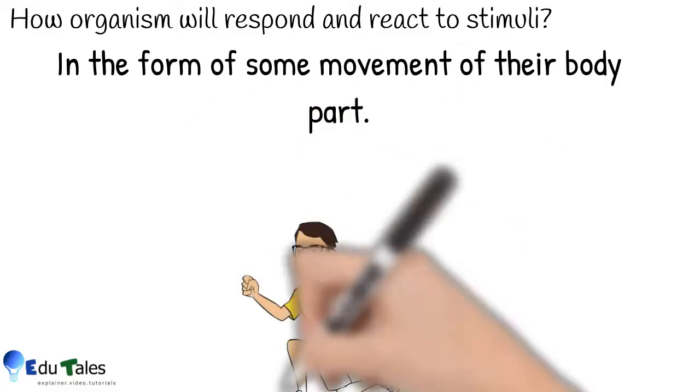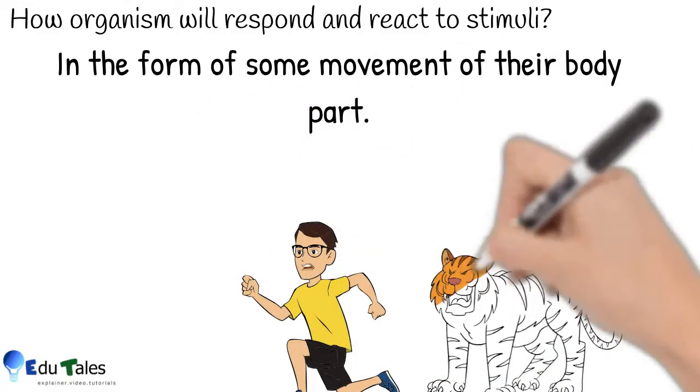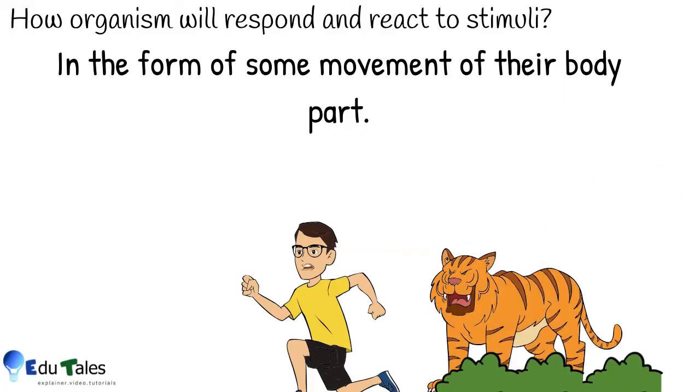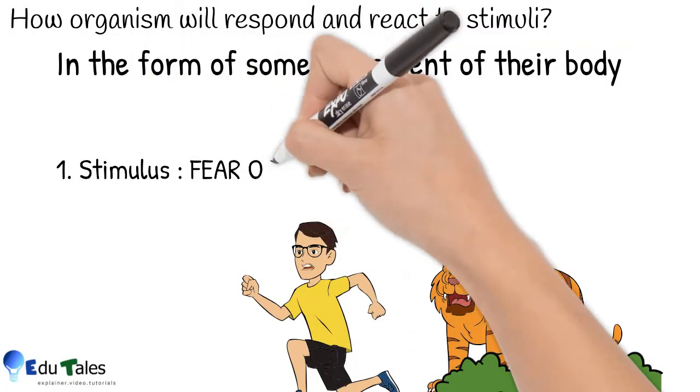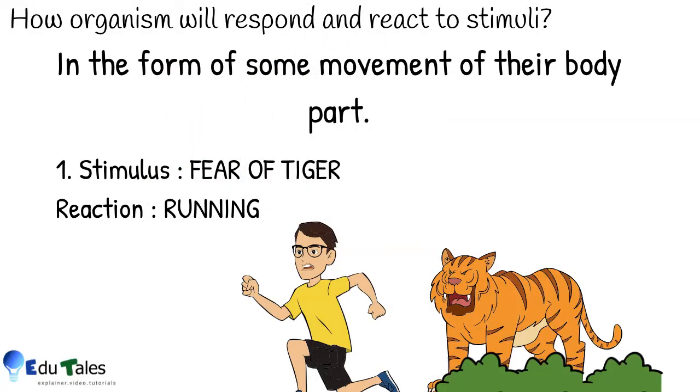Now let us understand our examples again. Here, fear of tiger is the stimulus and we react by running away.